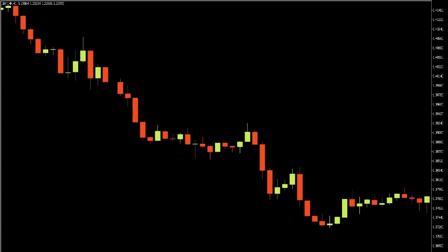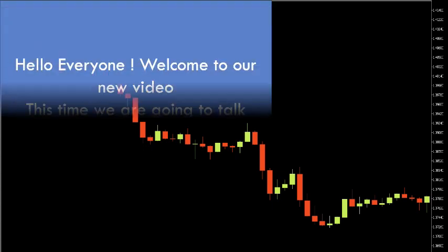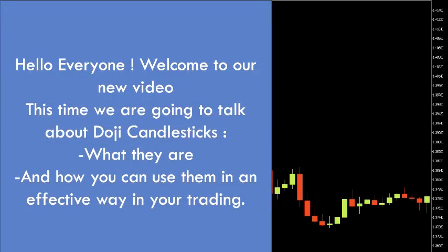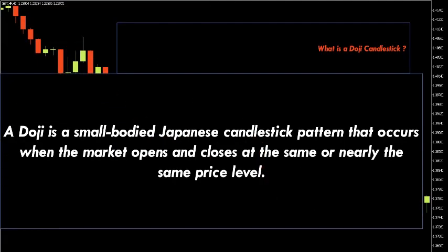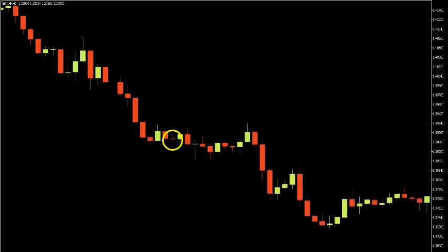Hello everyone, welcome to our new video. This time we are going to talk about doji candlesticks — what they are and how you can use them in an effective way in your trading. A doji is a small but important Japanese candlestick pattern that occurs when the market opens and closes at the same or nearly the same price level. A doji candlestick looks like a cross or a plus sign.